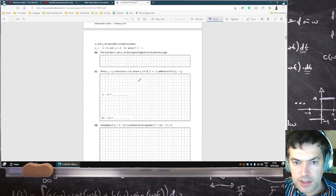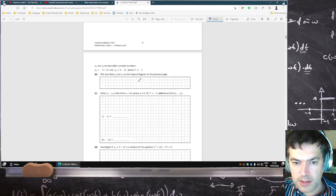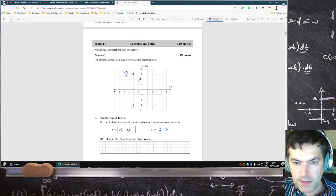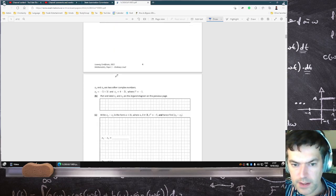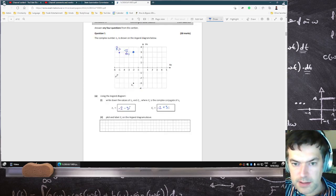Z2, Z3 are complex numbers. Plot Z2 and Z3 on the Argon diagram. Right, minus 5 plus 3i, and then 4 minus 2i.